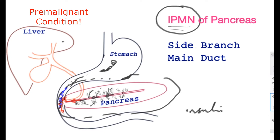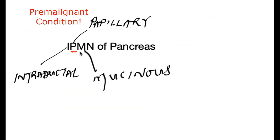So the pancreas has a main tube called the main duct, and then there are the side branches that bring fluid into the main duct. Now let's try and understand the condition IPMN and its two main variants: the side branch and the main duct.